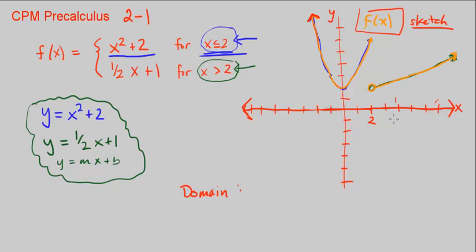To the right of 2, yes, we keep going forever. So the domain is all values of x. It's from x is negative infinity through positive infinity.